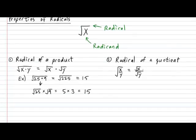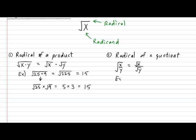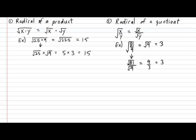Let's take a quick example: the square root of 81 over 9. In a straightforward manner, 81 over 9 reduces to 9, and the square root of 9 is equal to 3. Using the property, √(81/9) = √81 ÷ √9 = 9 ÷ 3 = 3. Both approaches give the same final result.